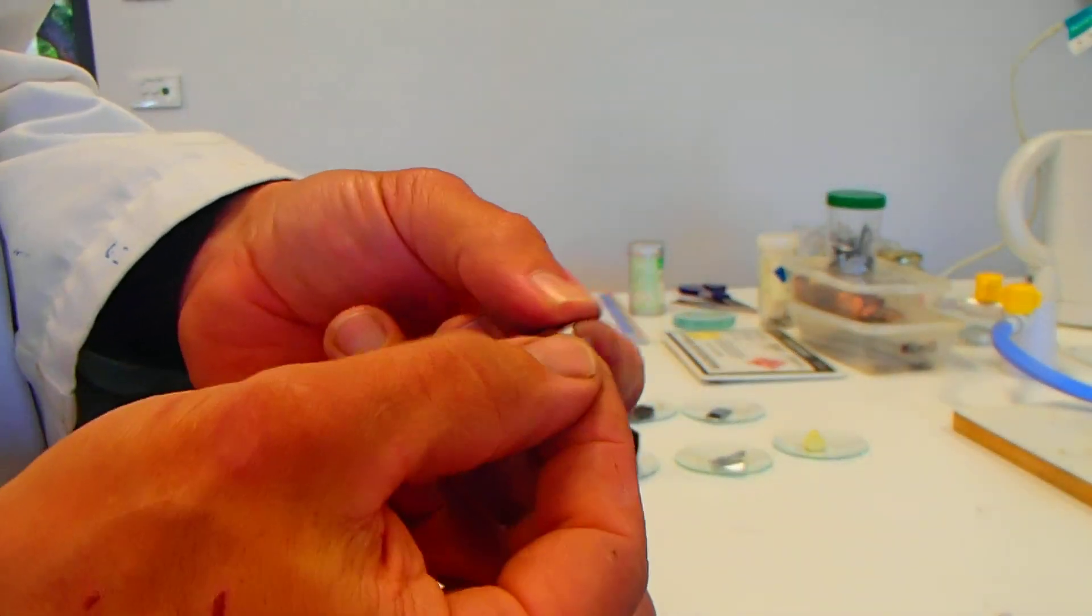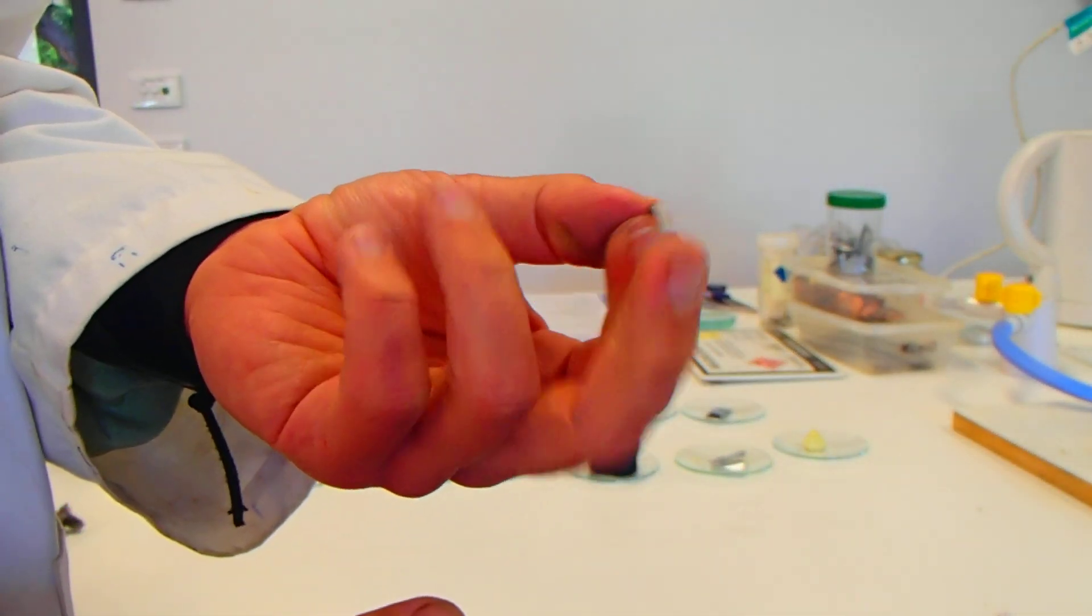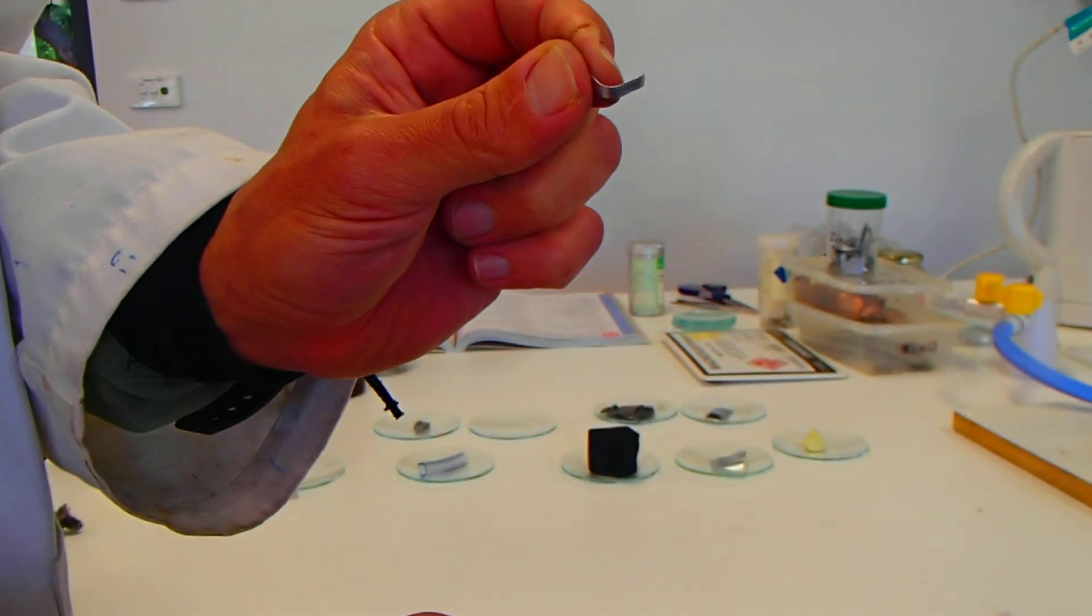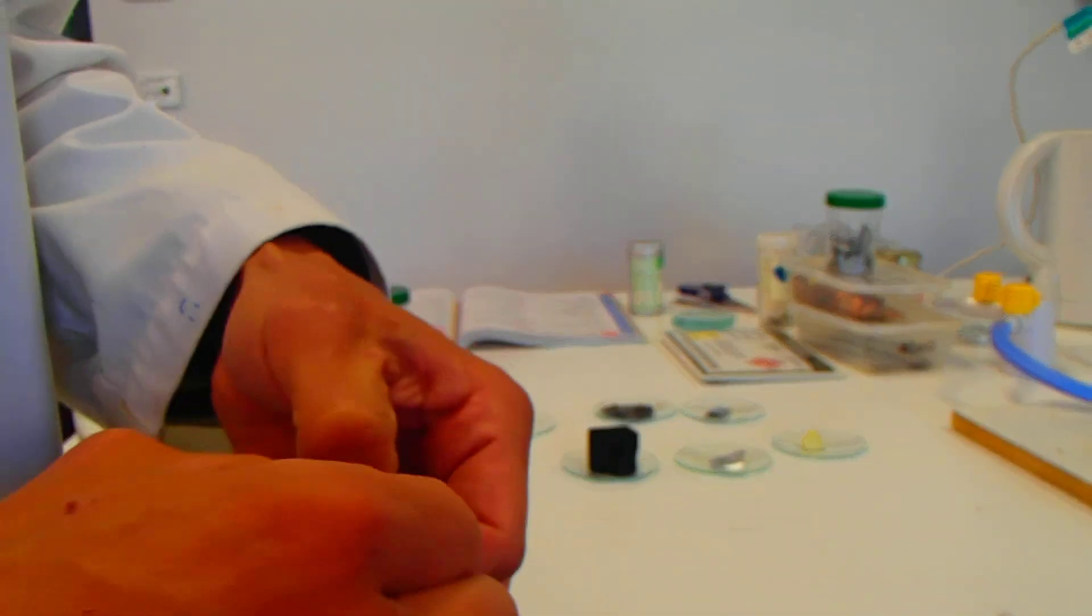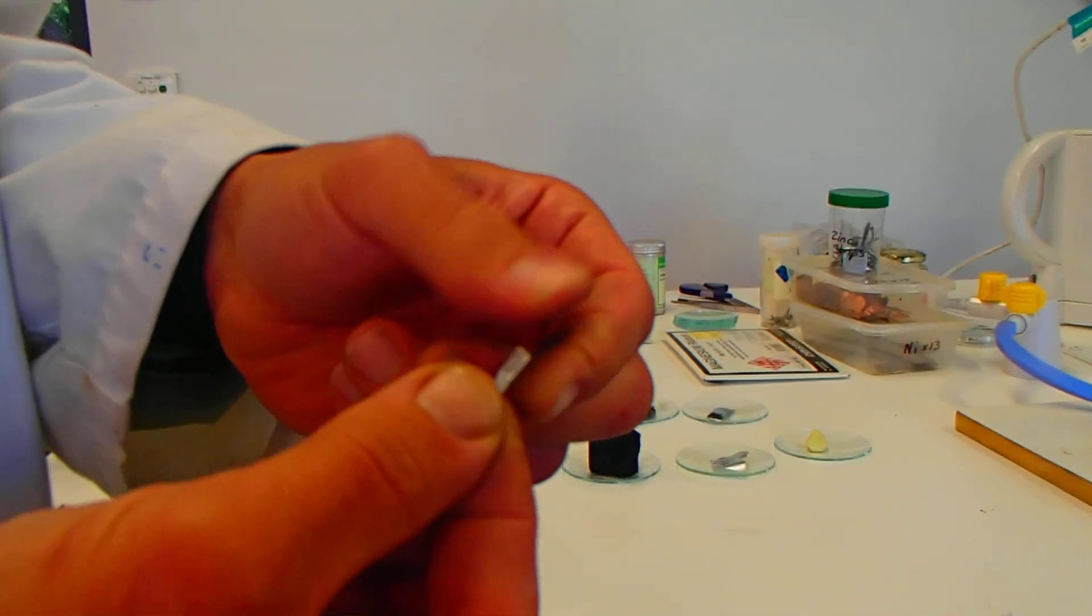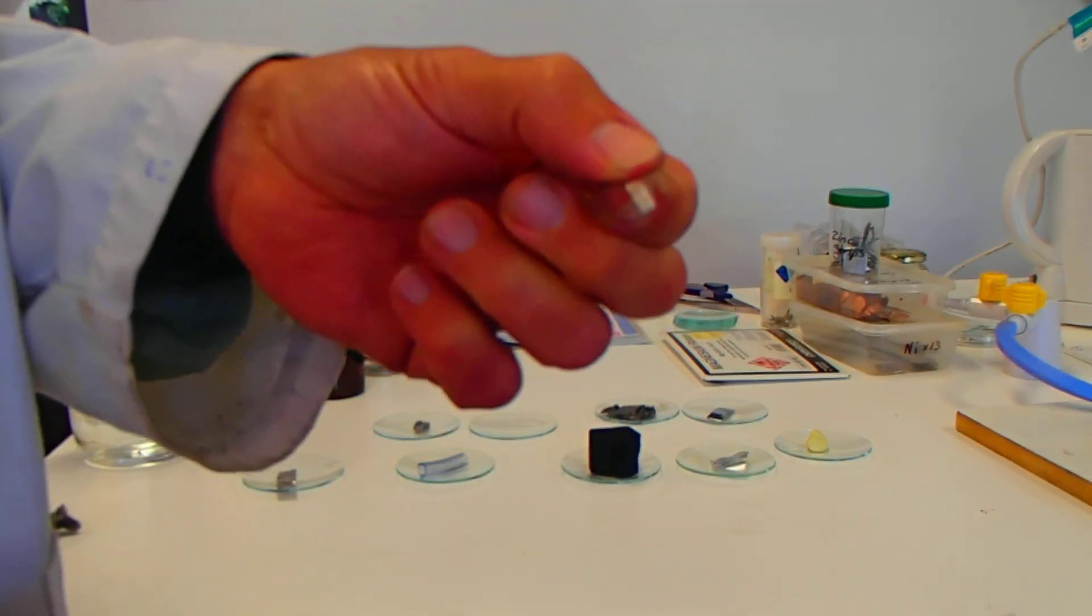The magnesium sample. Easily bent. Quite stiff. Similar to the zinc. Keeps its shape. Tears a little bit. Yeah, I can tear it there with some effort. So that's the magnesium.